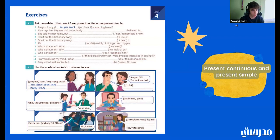So, that one would be, who is that man? Do you recognize him? Good. Okay. Number 10. I think of selling my car. Would you be interested in buying it? What about that one? I'm thinking. Good. I can't make up my mind what you think I should do. What do you think I should do? Good. Gary wasn't well earlier, but he seemed okay now. Okay. But he seems okay now. All right. Good. Okay.